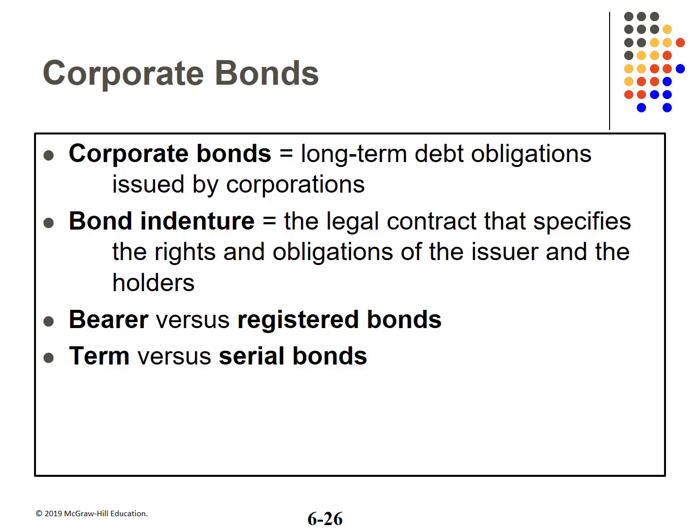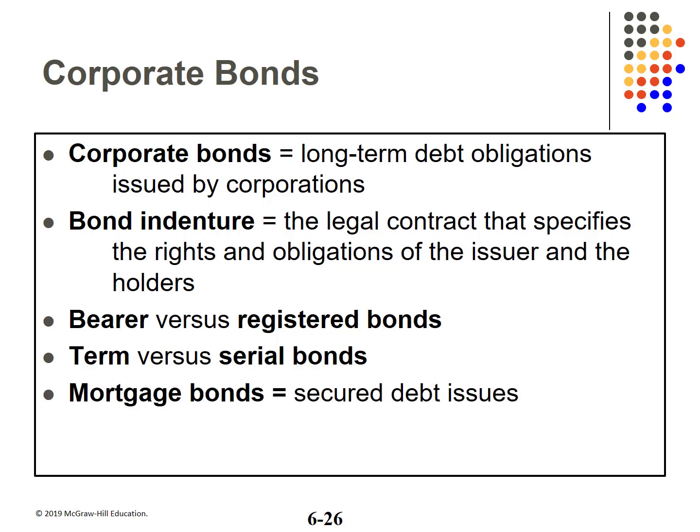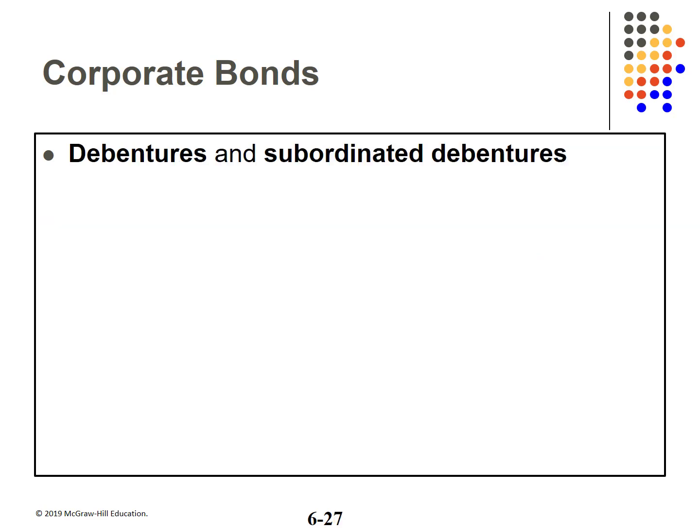Term bonds are the most common — in a term bond issue, all bonds mature on the same day. A serial issue divides the total issue into various maturity dates spread over several years. Mortgage bonds are secured debt backed by real estate. Debentures is an old-fashioned word for uncollateralized debt. Subordinated debentures are unsecured, and in the event of bankruptcy, any proceeds to the holders will be subordinated — given to whoever the bonds are subordinated to.